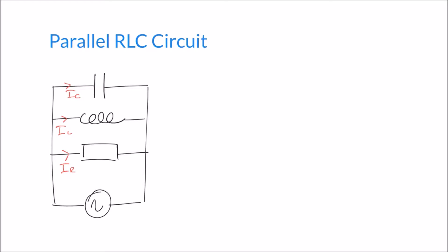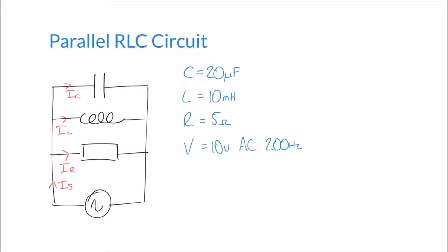Once we've evaluated these separate currents we're then going to combine them to evaluate the supply current, which I'll mark as IS. Our component values are: capacitor 20 microfarads, inductor 10 millihenries, resistor 5 ohms, and voltage supplied is 10 volts AC with a frequency of 200 hertz.